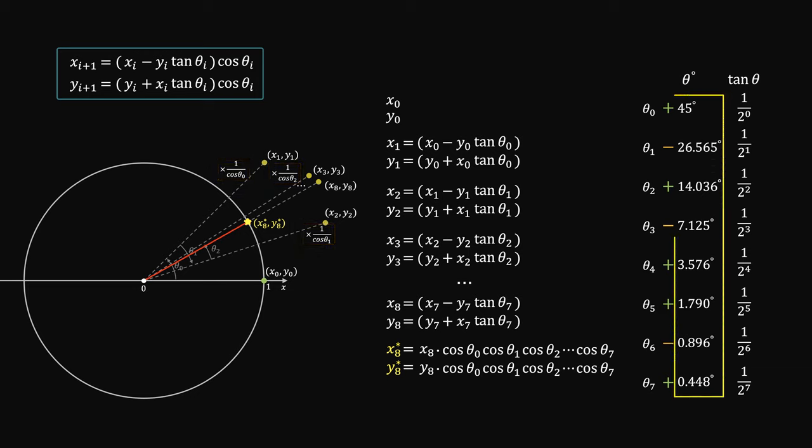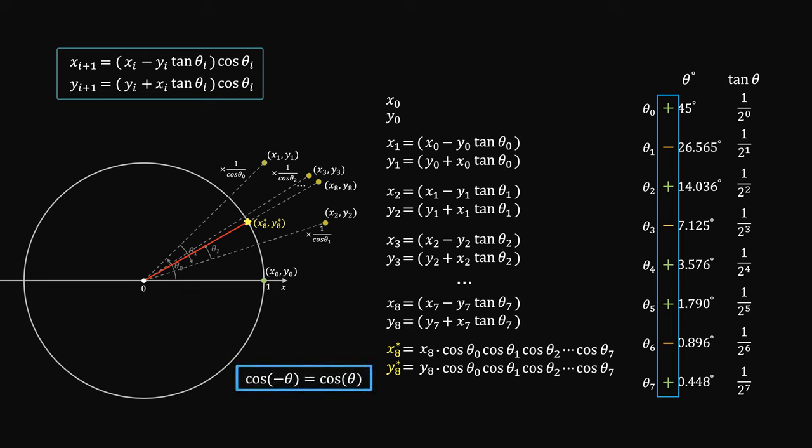Note that these rotation angles are fixed, so you have to rotate by these angles. The only thing that's under your control is whether to rotate forward or backward. But because cosine is an even function, so cosine negative theta equals to cosine theta. So whether you rotate forward or backward, the product of all these cosines are the same.